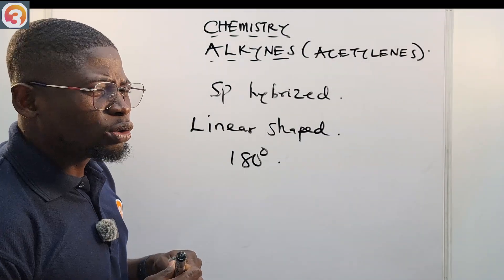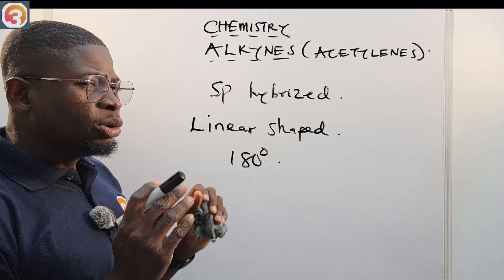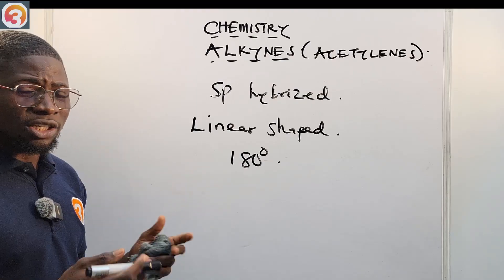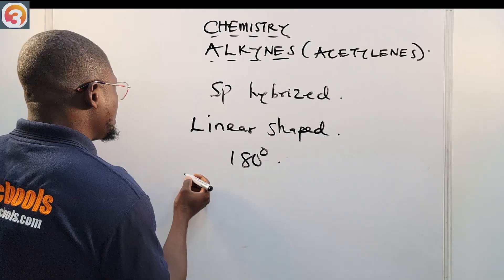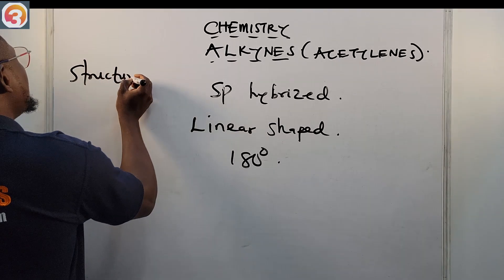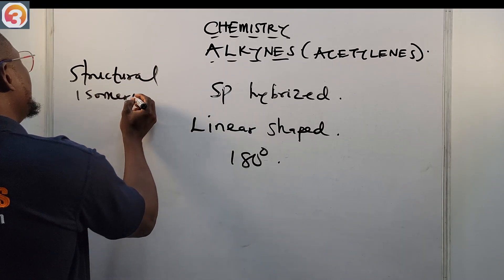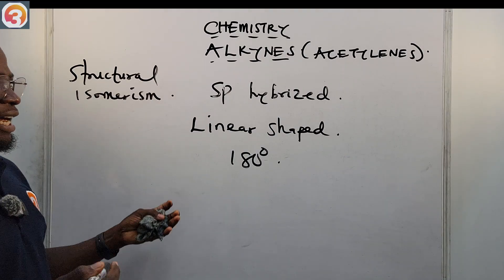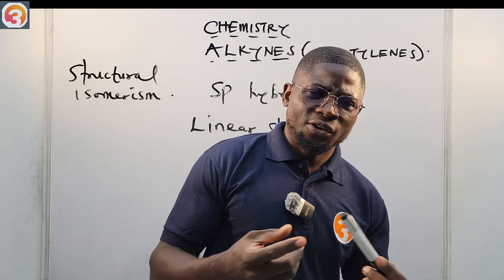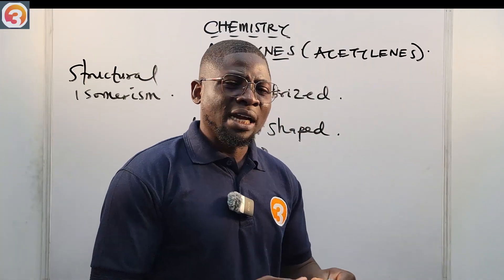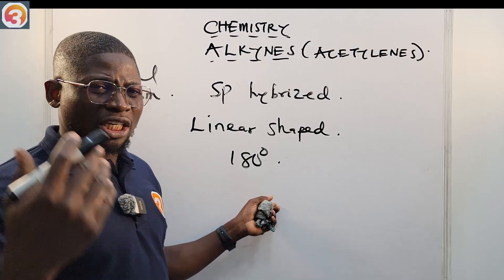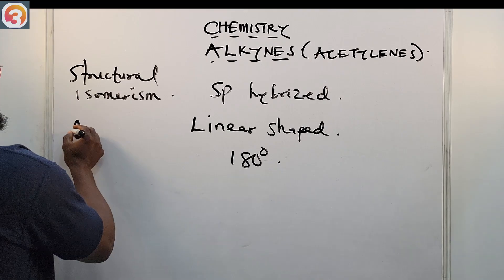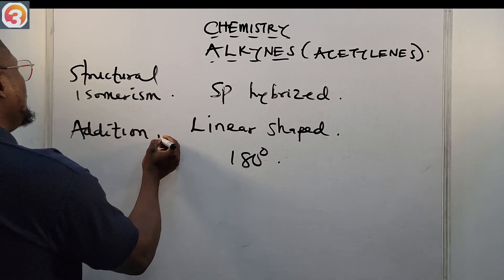Alkynes undergo structural isomerism — chain, position, and functional group isomerism, all under structural isomerism. They also undergo various addition reactions: hydrogenation, halogenation, hydrohalogenation, and so on.